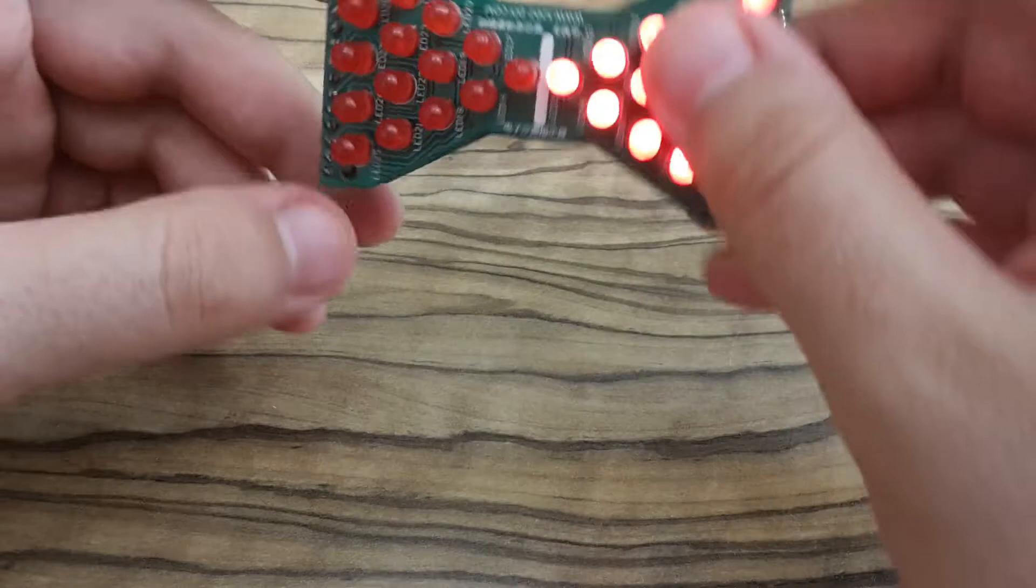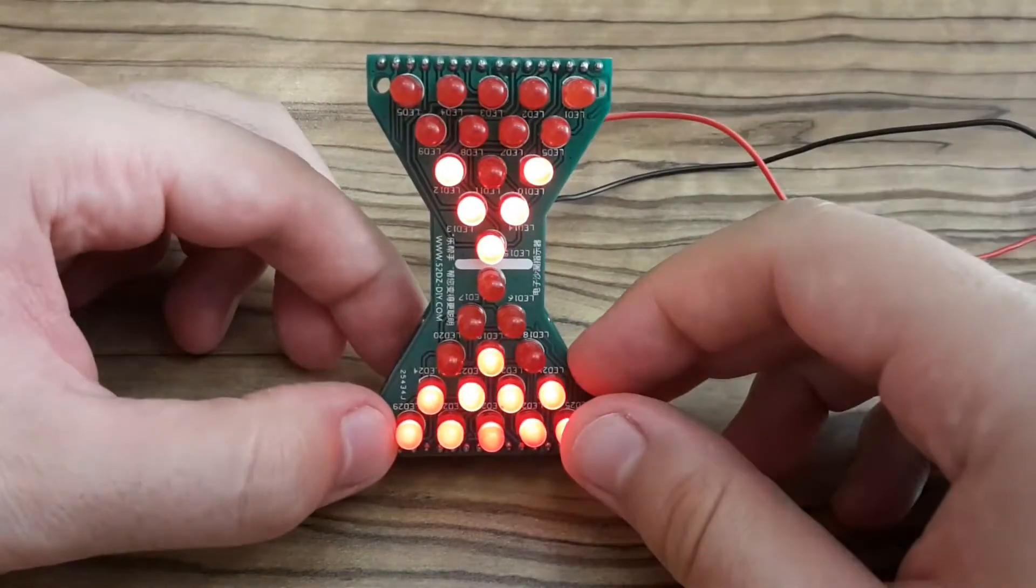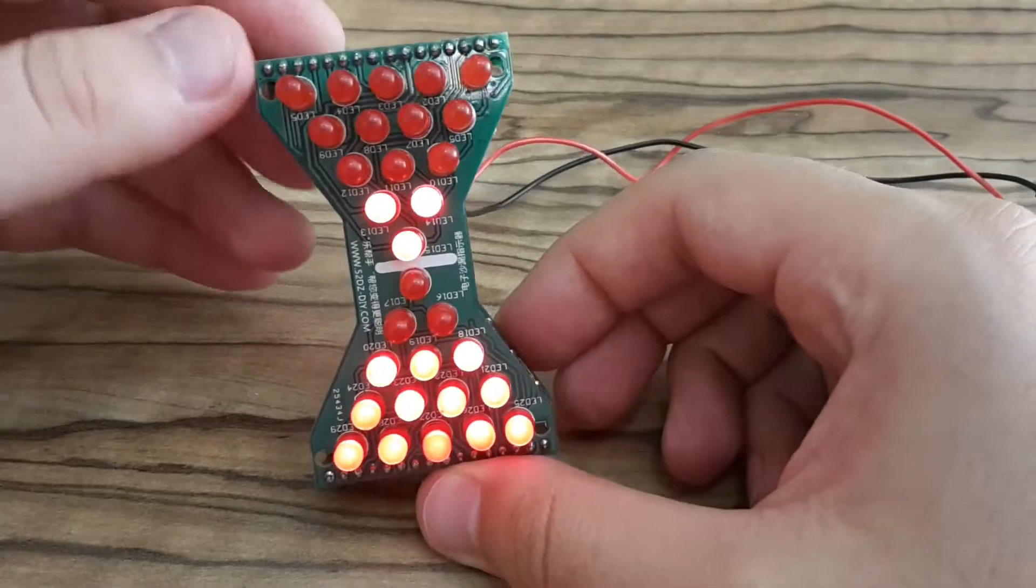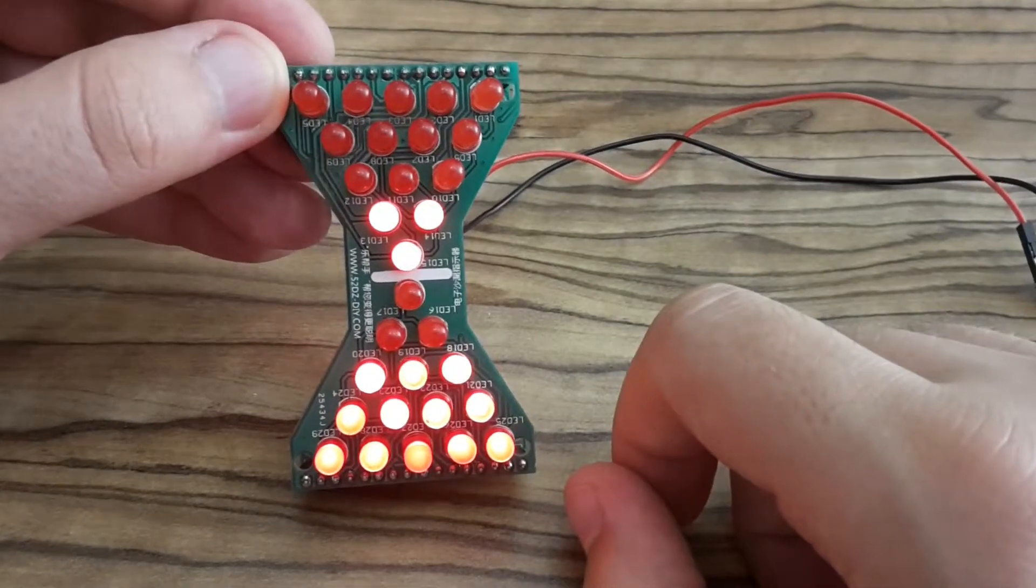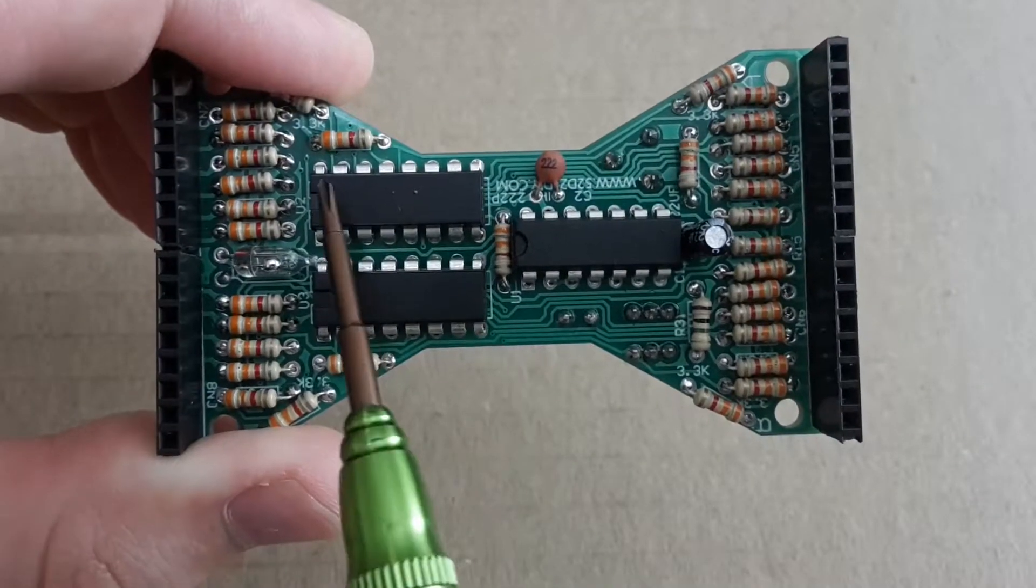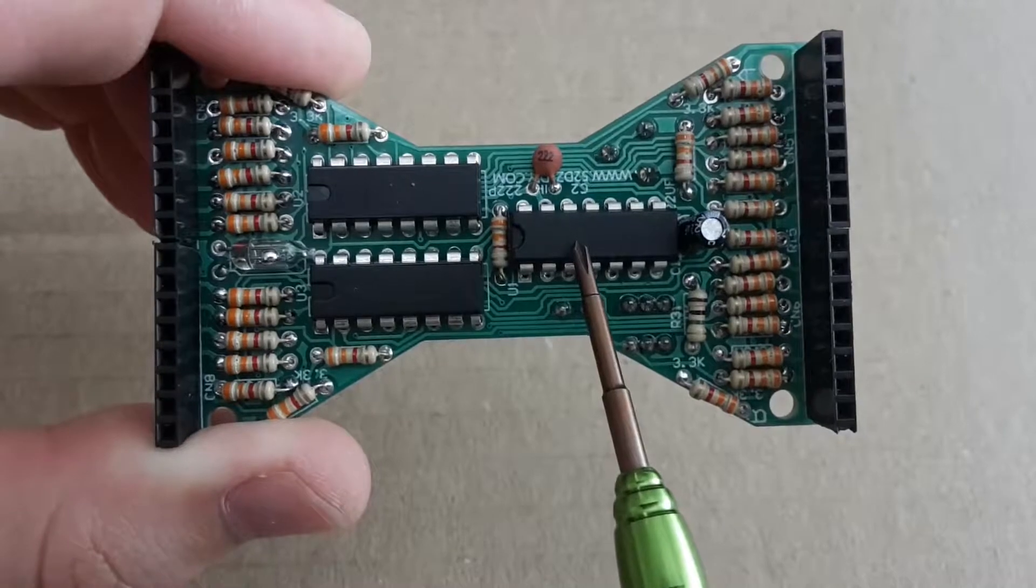And here you can see the bug which I mentioned. These three LEDs are not going down. But before fixing the hourglass I'm going to explain to you how these ICs work.